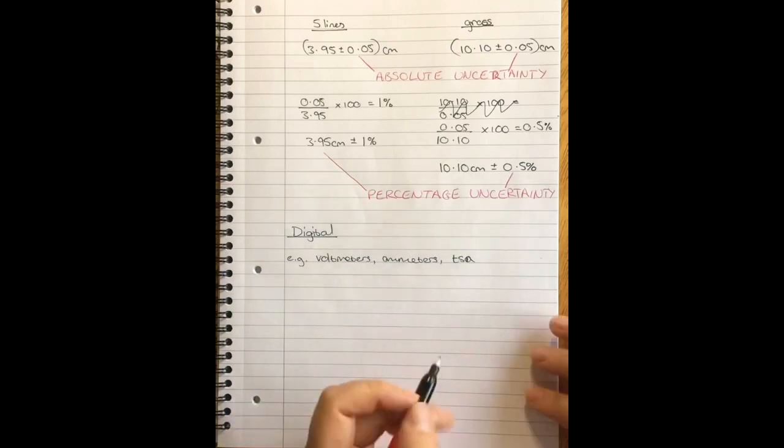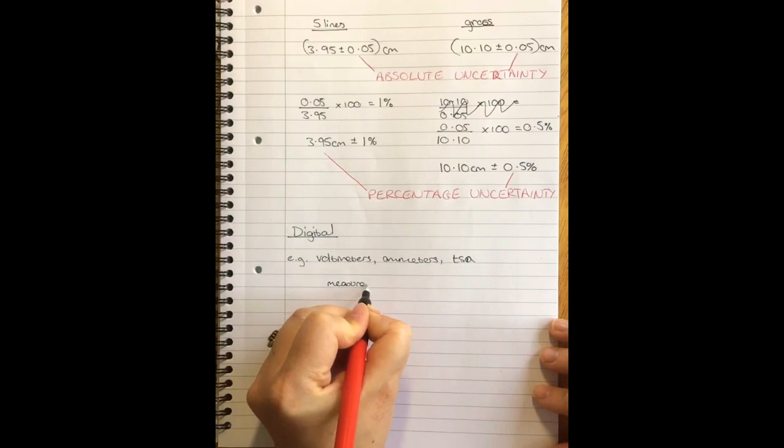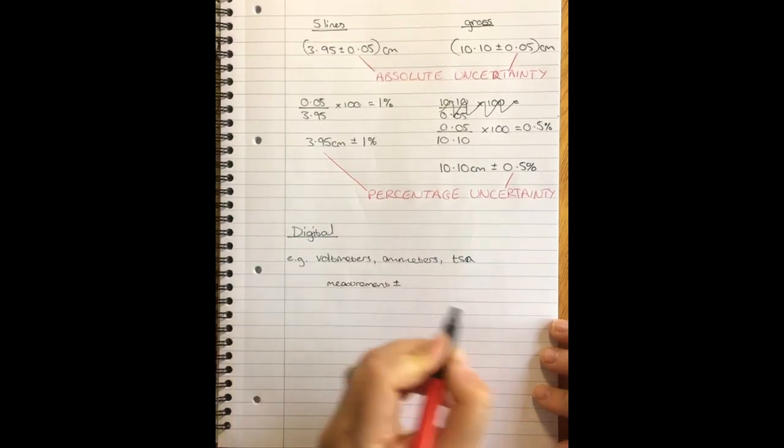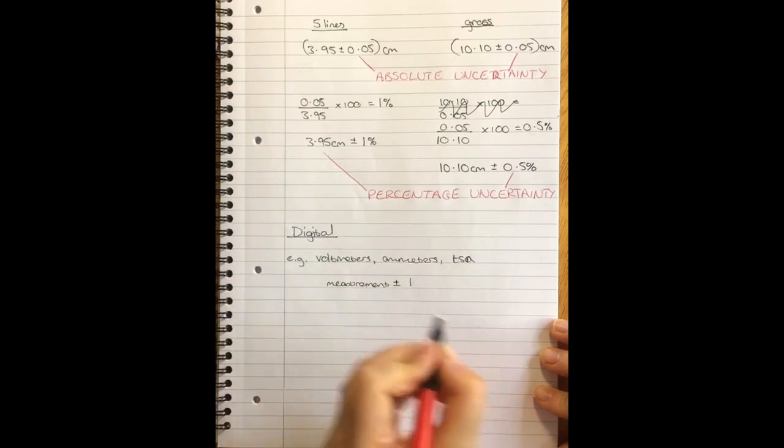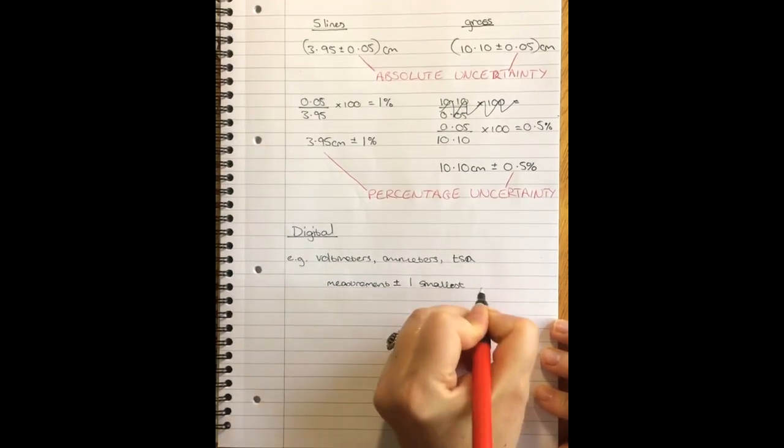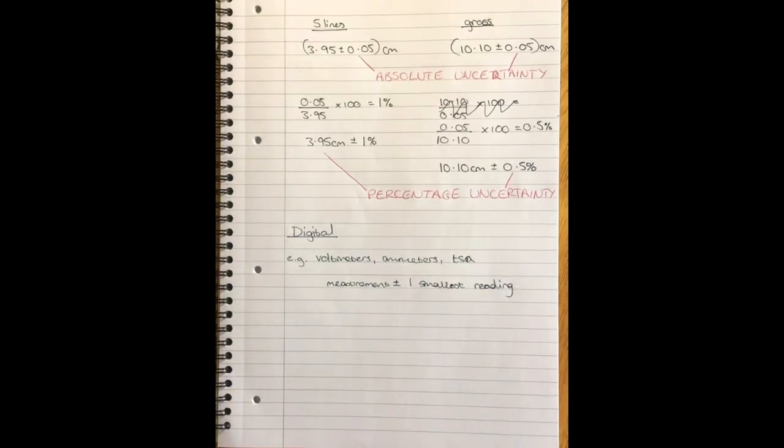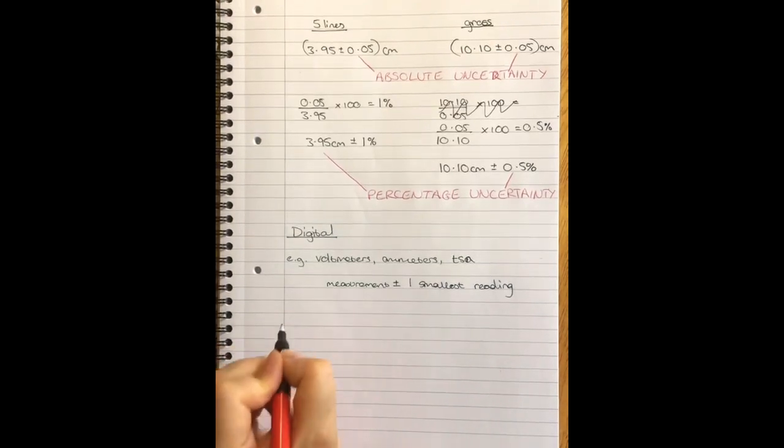For digital, it is measurement plus or minus a whole one of the smallest reading.